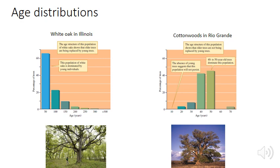For the white oaks in Illinois, the majority of individuals are very young — the age distribution is biased towards young individuals. This means that older individuals are managing to reproduce and replace themselves, so the population is probably rising or at least staying constant. Conversely, the cottonwoods in the Rio Grande show an age distribution biased towards much older individuals, suggesting that old individuals are not reproducing well enough to replace themselves. In this region, the construction of dams has prevented the regular flooding that allows cottonwood seeds to germinate and become established.